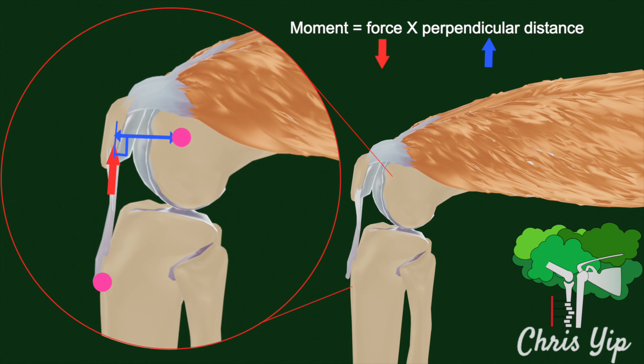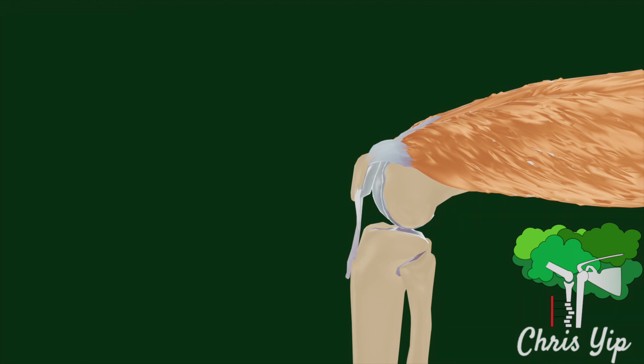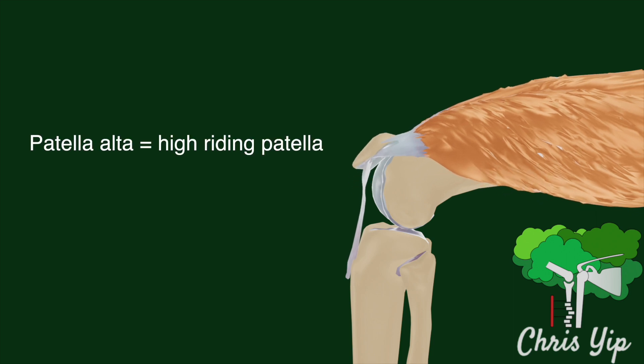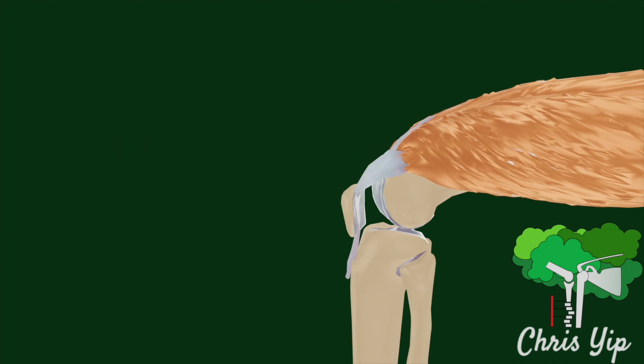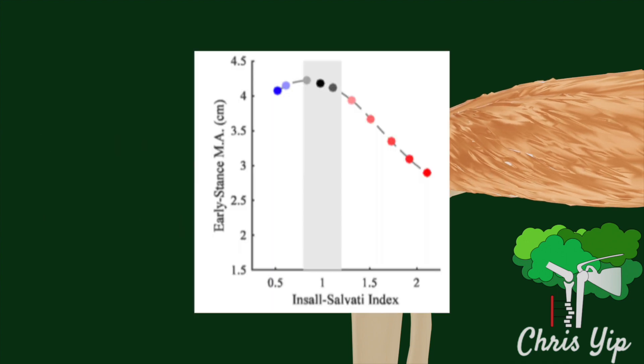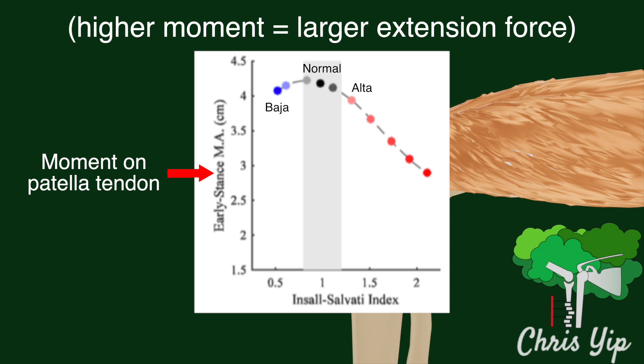In conditions where the patella is significantly displaced from its physiological position, such as in patella alta or patella baja, this affects the moment arm of the patella tendon, which can result in complications such as an extension lag due to the increased demand on the quadriceps for knee extension.